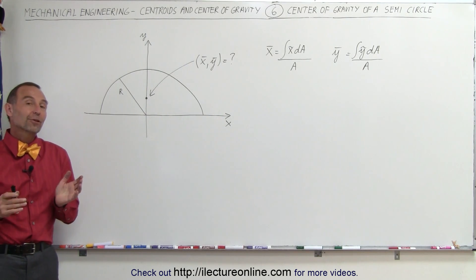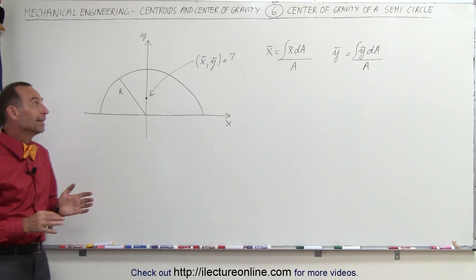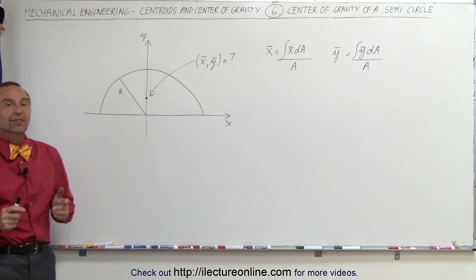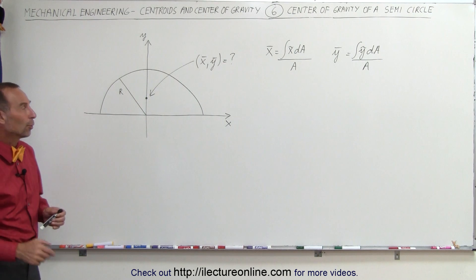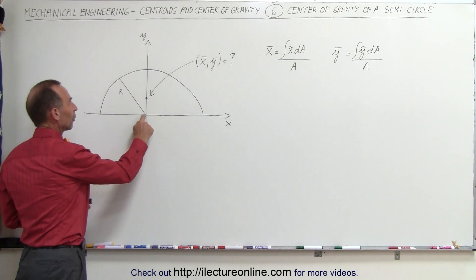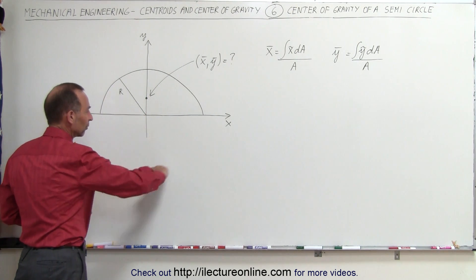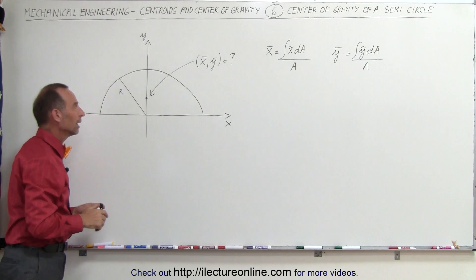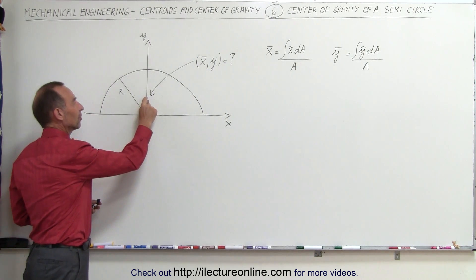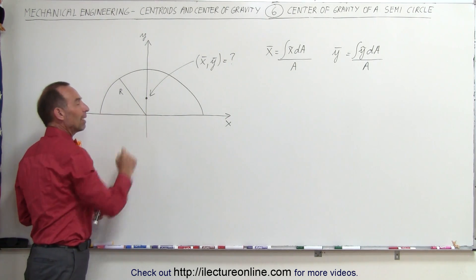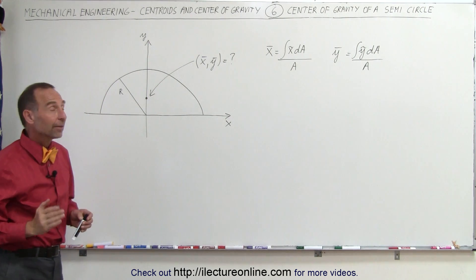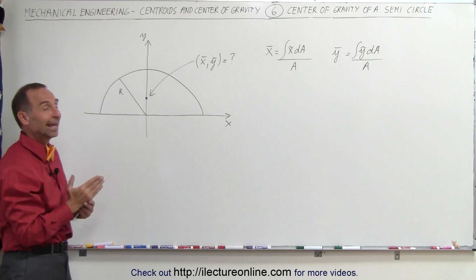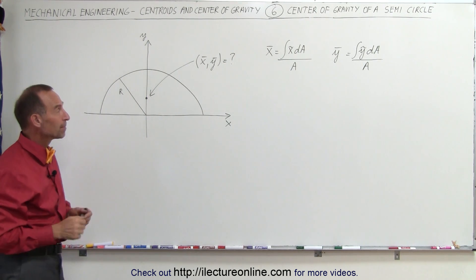Welcome to ElectronLine. In this video we're going to find the center of gravity of a semicircle. Notice the center of the circle is at the origin. Of course if this was a complete circle it would be at the origin. We realize that the center of gravity will be somewhere on the y-axis, which means that the x-coordinate in this case will be zero.